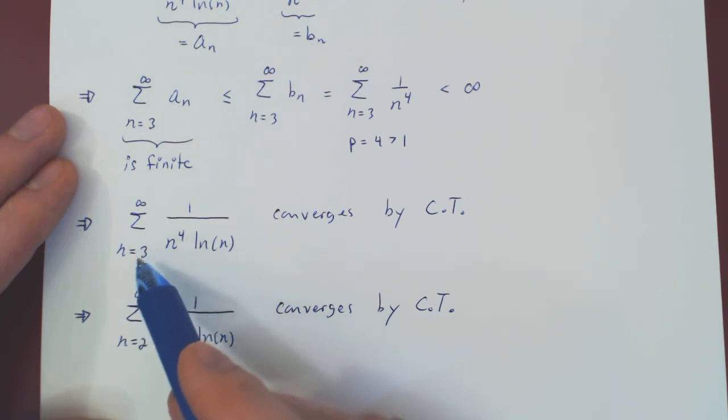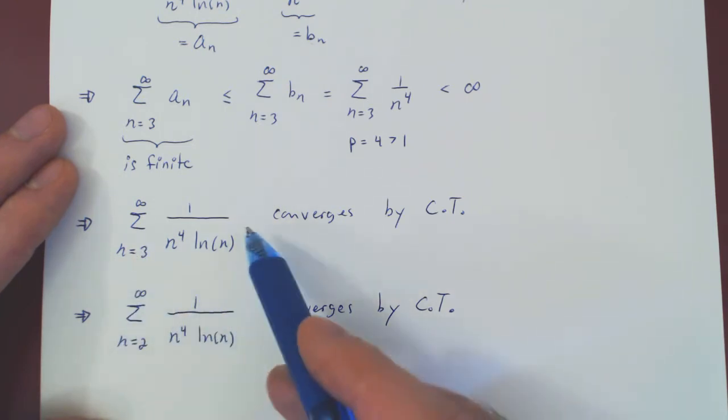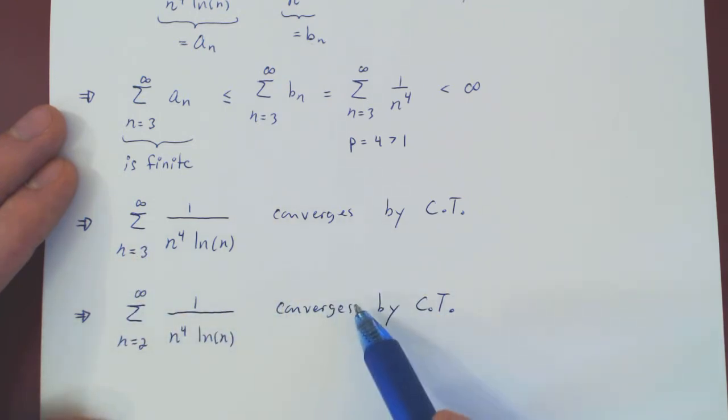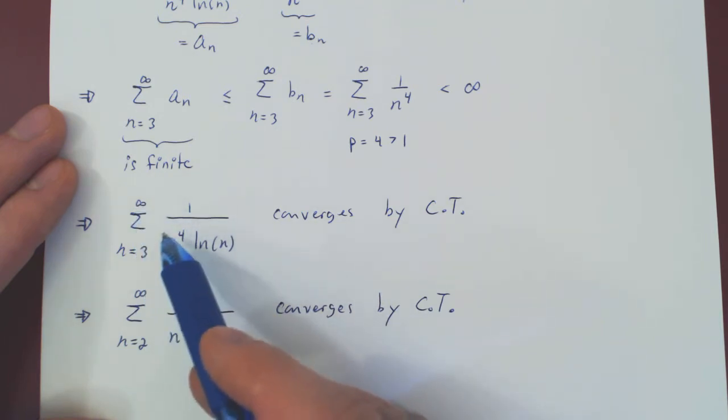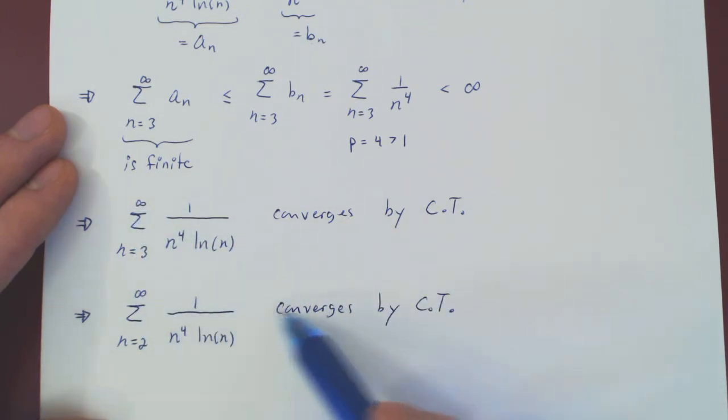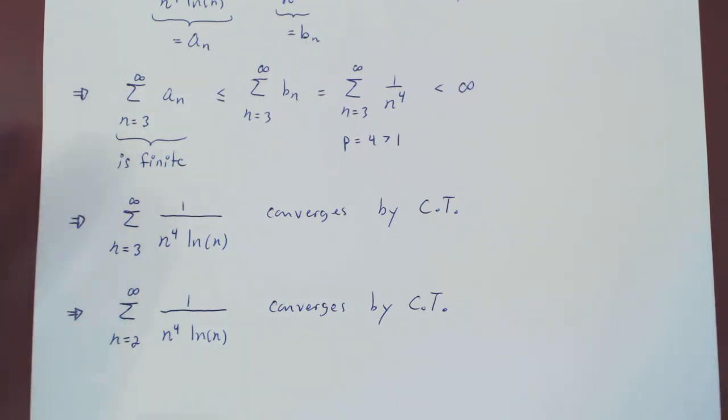If we ignore the first few terms of a series, this never affects convergence. So, because the series from 3 to infinity converges, the series from 2 to infinity also converges. And that's it.